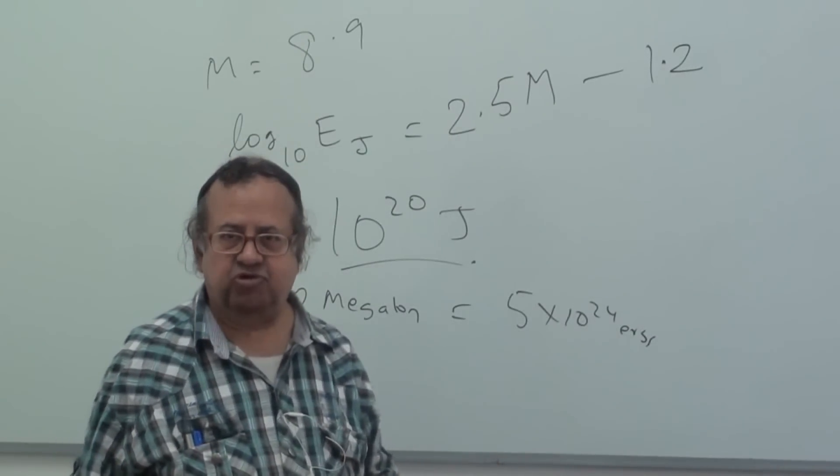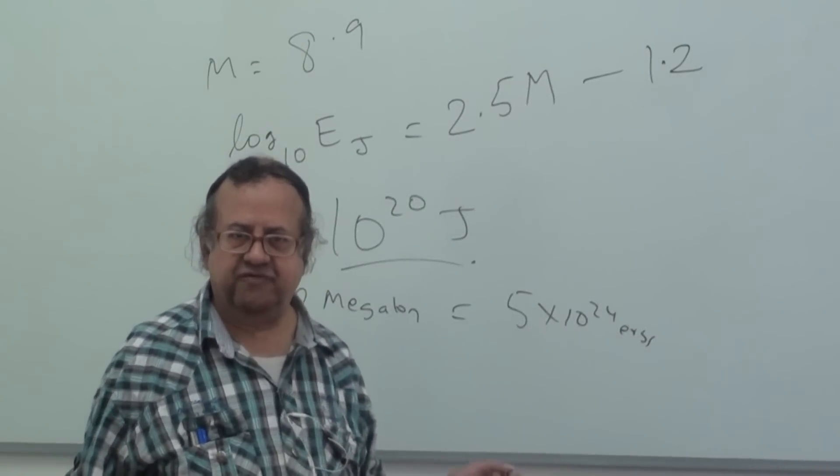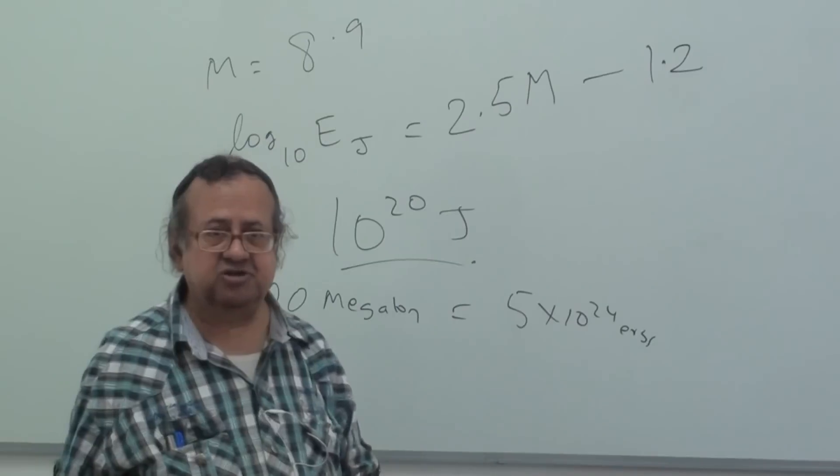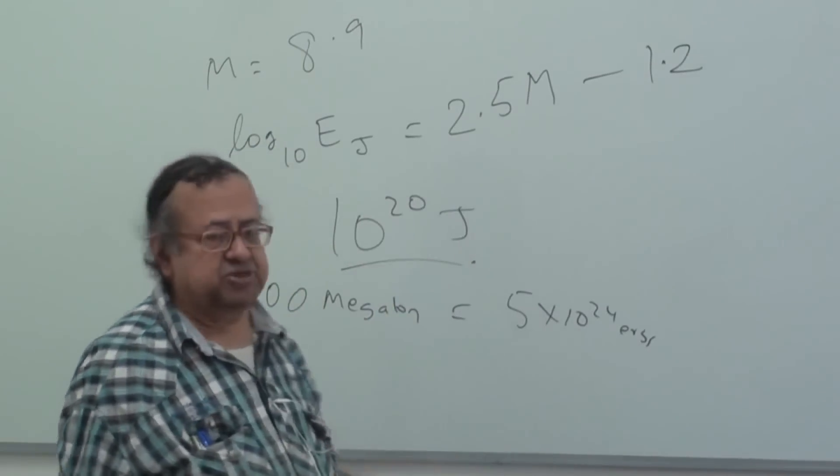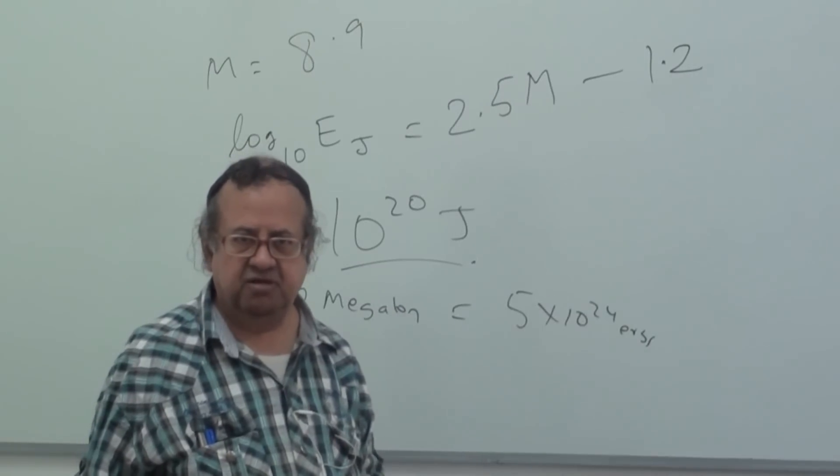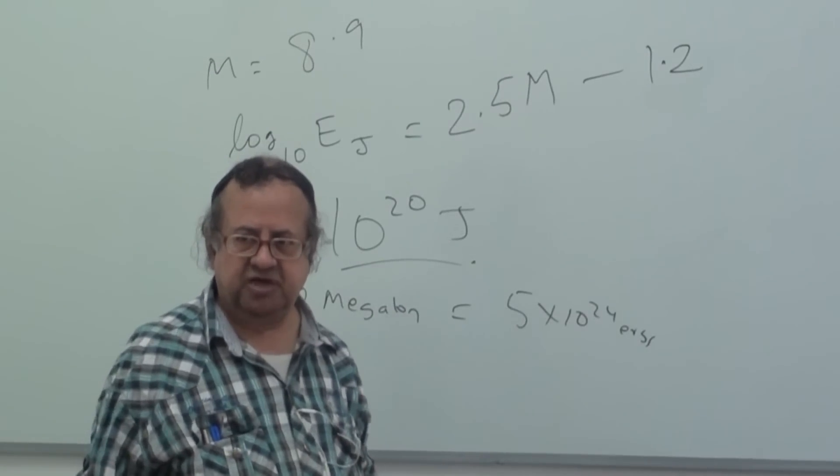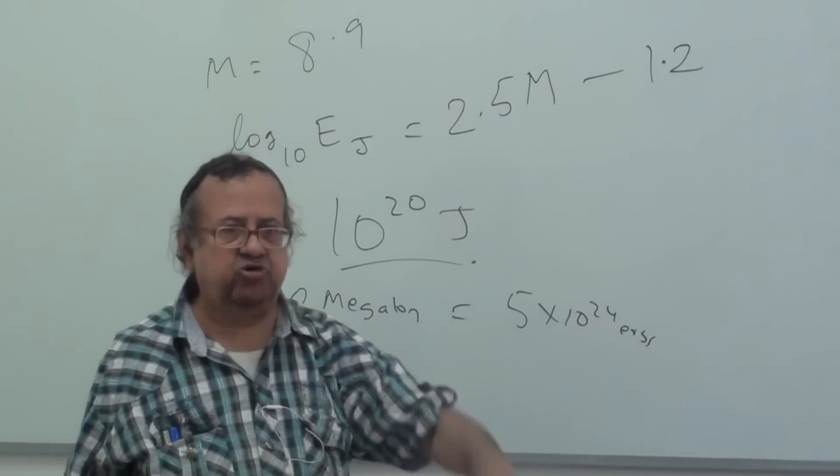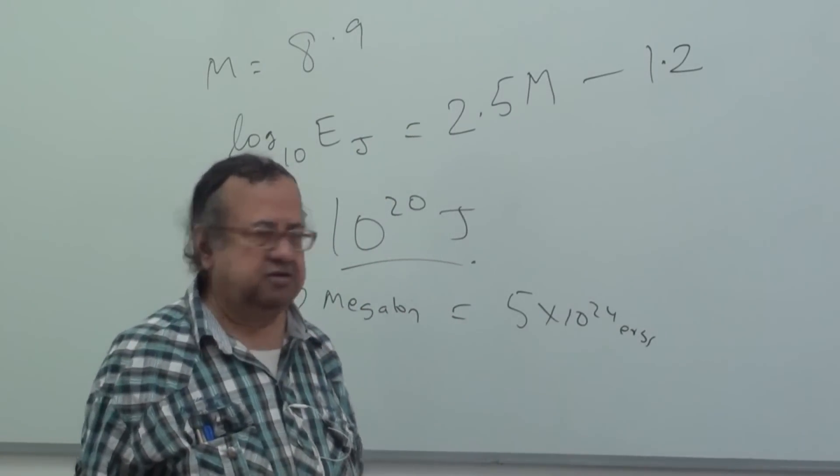So this is equivalent to something like about 30,000 or 40,000 nuclear weapons. That's why you might have seen the post that it's equal to several tens of thousands of Hiroshima levels. So this was the estimate. So something like magnitude 7 would be about 10 times less. About 100 times less.